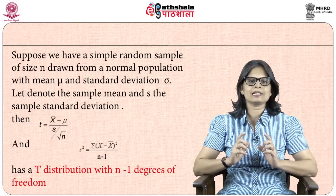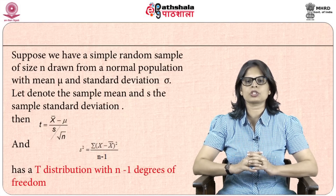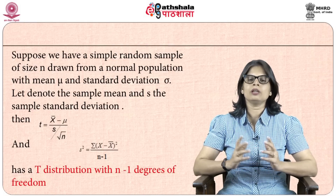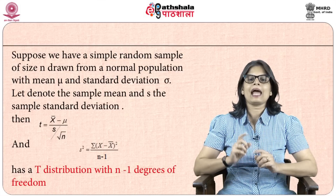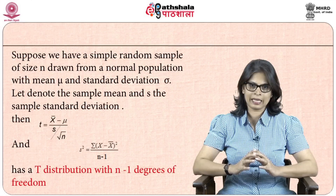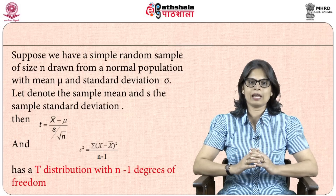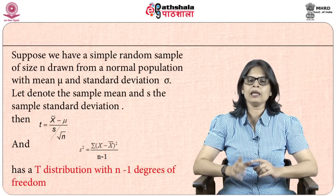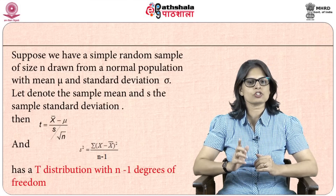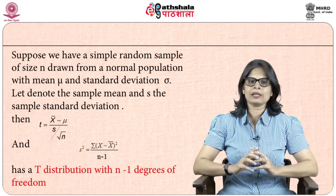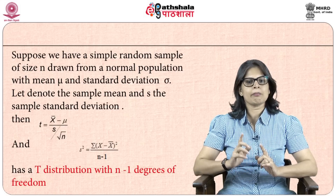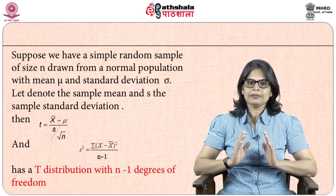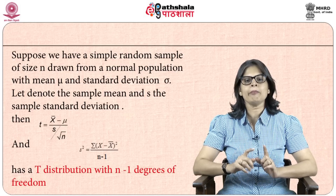Suppose we have a simple random sample of size n drawn from a normal population with mean mu and standard deviation sigma. Let x-bar denote the sample mean and small s denote the sample standard deviation. Then the variable t is given as t equals x-bar minus mu divided by s upon square root of n. Here s-squared equals summation of (x minus x-bar) squared divided by n minus 1. This variable t has a t-distribution with n minus 1 degrees of freedom.